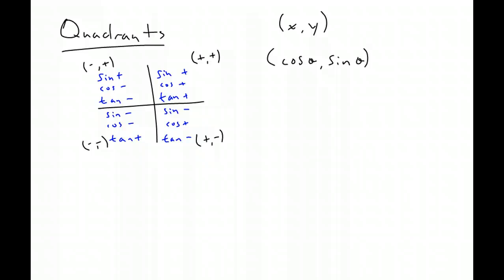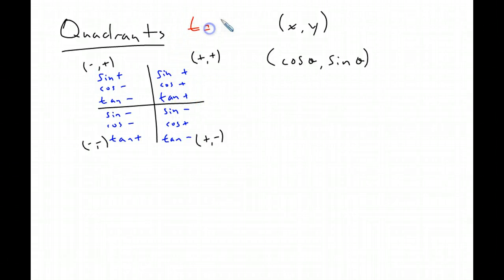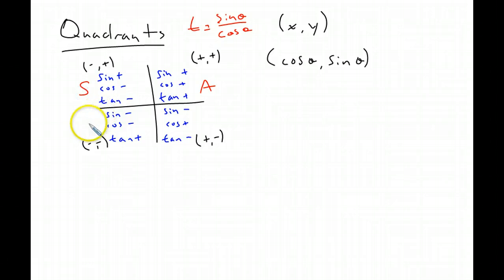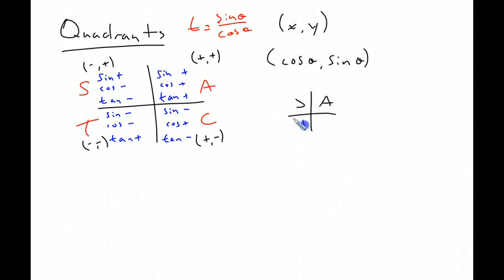The next tool is correctly labeling quadrants to determine sign. In the first quadrant, x and y are both positive, so sine, cosine, and tangent are all positive. In the second quadrant, only y is positive, so only sine is positive. In the third quadrant, both are negative but tangent is positive. In the fourth quadrant, only cosine is positive. I remember this with 'All Students Take Calculus' — All positive, Sine only, Tangent only, Cosine only — going quadrant by quadrant.